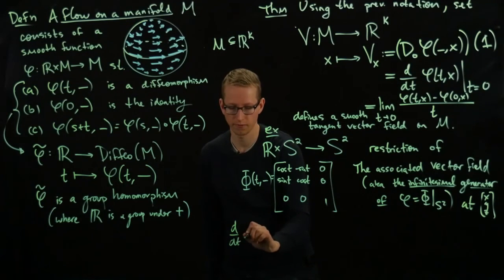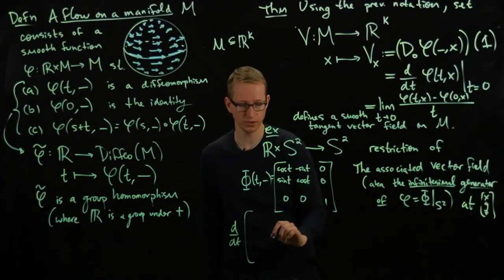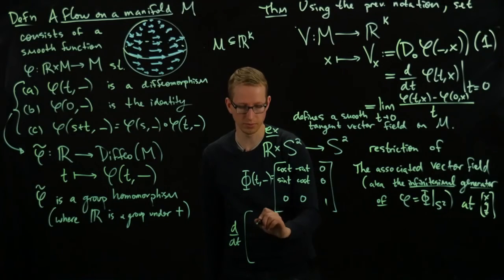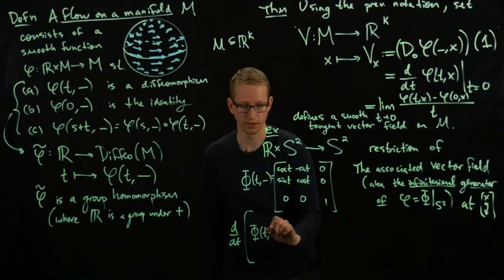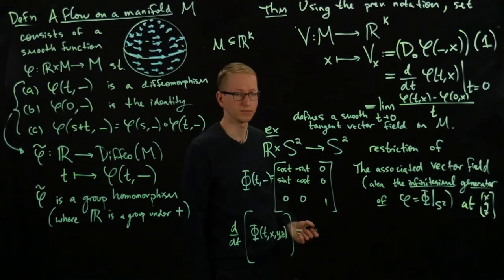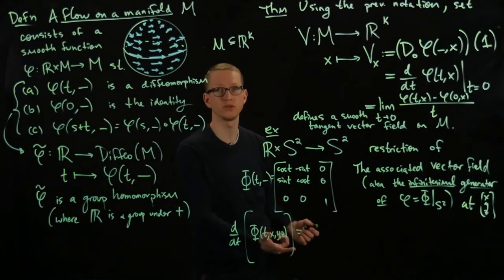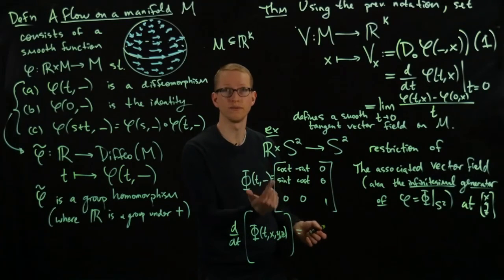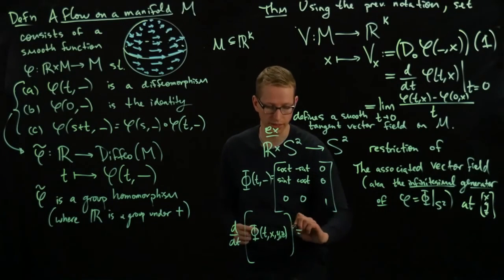So we take d/dt of this matrix. Let me even not write that. I know it's, I have the formula here, φ_t at (x,y,z). And if I plug this in, well, (x,y,z) has no t dependence. So I just take the derivative of this and evaluate it, by the way, at zero.